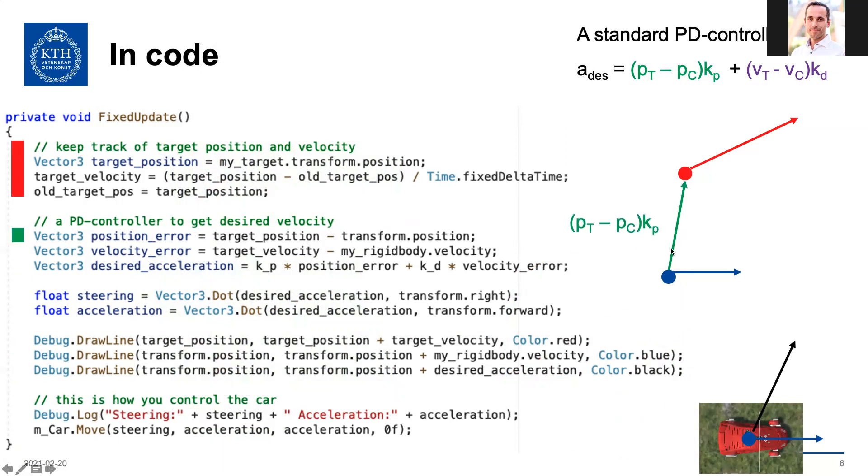And then we compute the position error here in green. We compute the velocity error in purple, and then we compute the desired acceleration like this. And then we just need to project these onto these two directions of transversal and longitudinal like this. And then we input it down here, and this is just for debug purposes, drawing these lines that you saw in the previous slide.